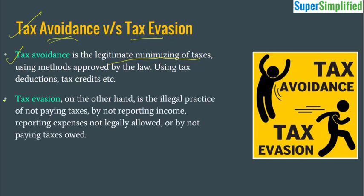There is another term called tax evasion. Tax evasion on the other hand is an illegal practice of not paying taxes by not reporting income. So you under-report your income, you show less revenues so that the tax chargeable will be less. And then you report more expenditure so that your revenue comes down and you have to pay less taxes. These are some of the illegal ways of evading taxes, and this is completely illegal.